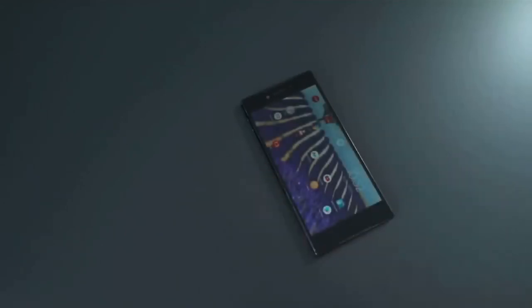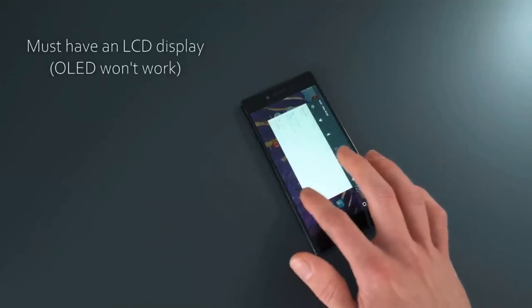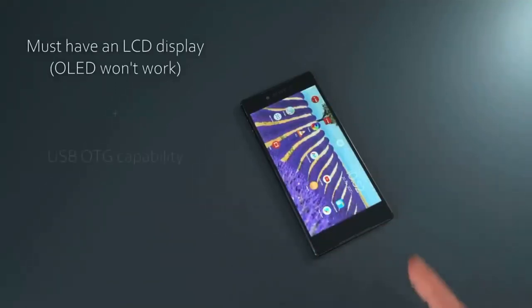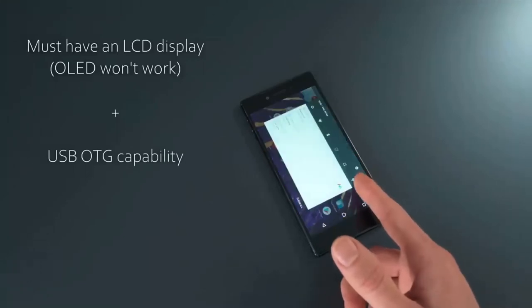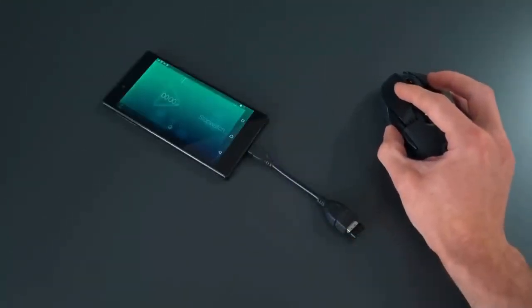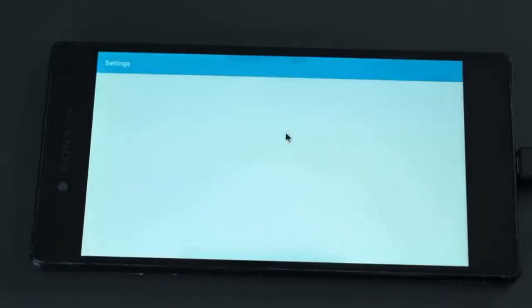Anyway, if you choose to use a phone too, even if it's just to keep costs low by using an old one that you have lying around, you need to make sure that one, it actually uses an LCD panel rather than something like an OLED which wouldn't work for this job, and two, it has to have USB OTG support so that you can plug in a mouse and keyboard to operate it remotely once it's all boxed in.